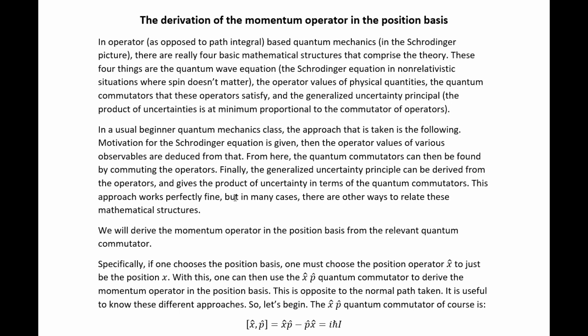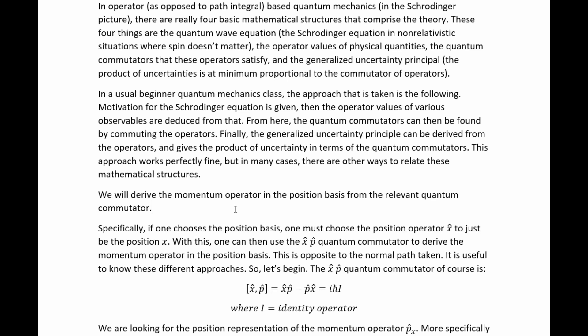This approach works perfectly fine, but in many cases, there are other ways to relate these mathematical structures. In this particular case, we'll be reversing the way that two of them are usually related. Usually, you commute the operators to get the commutation relations. Here, we're going to start with the commutation relation and get one of the operators.